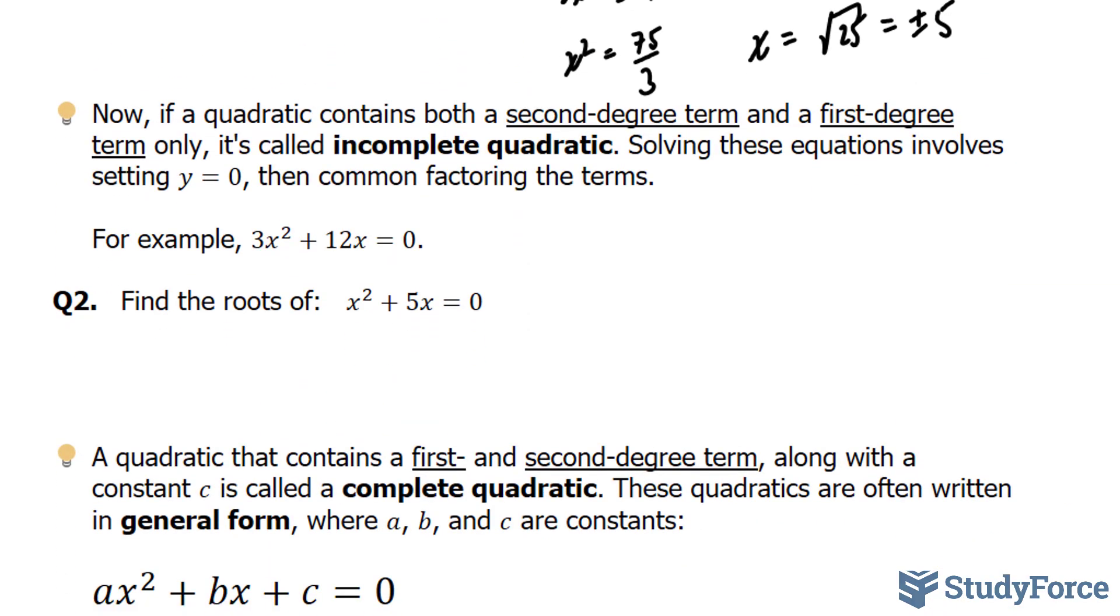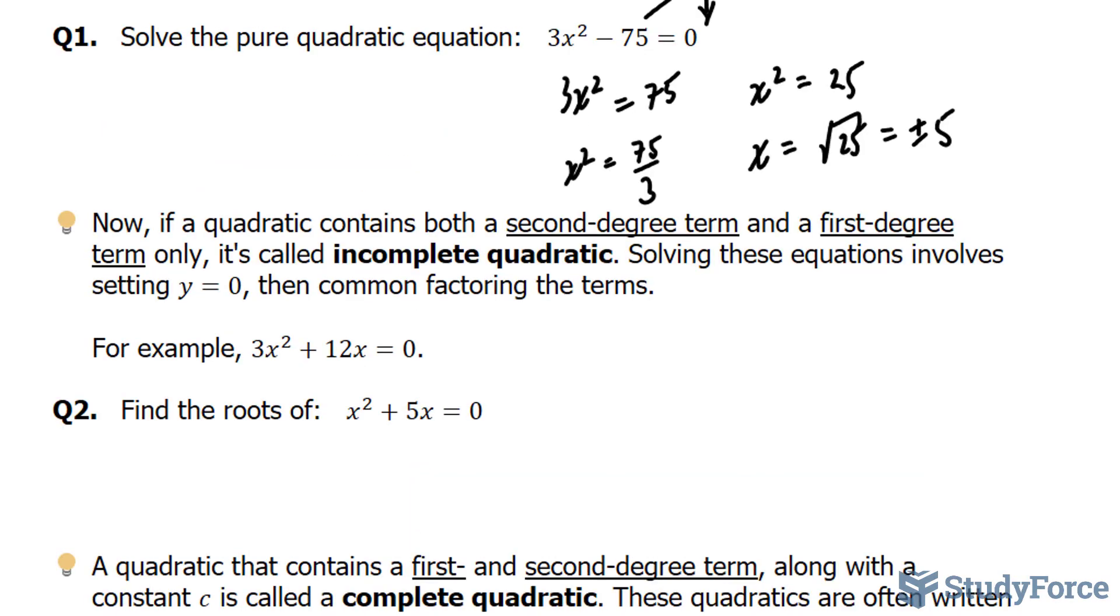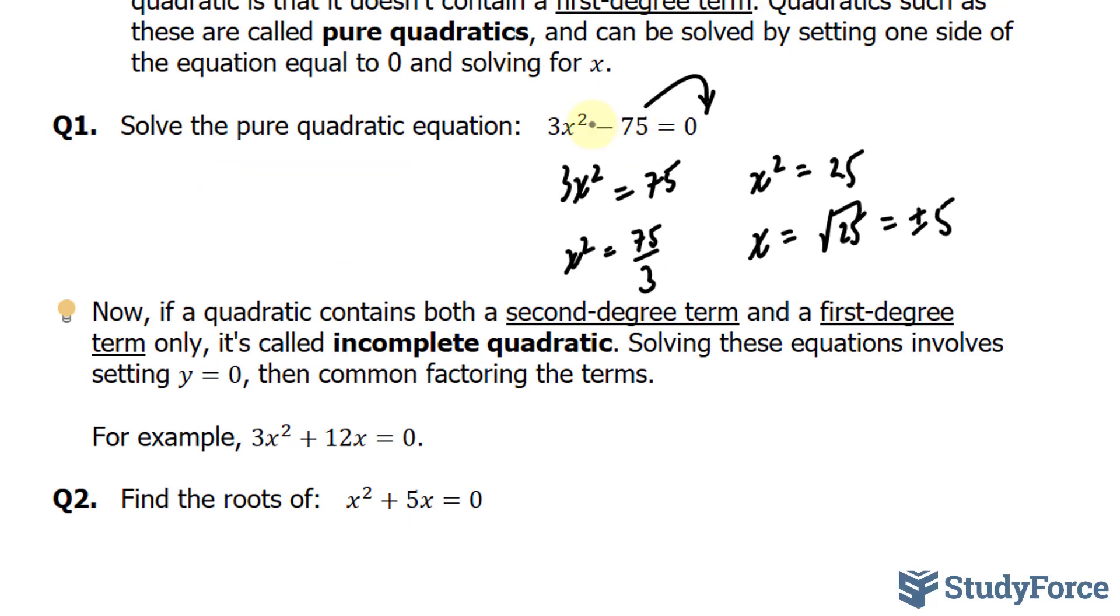Now, if a quadratic contains both a second degree term and a first degree term only, there's no constant such as the minus 75 here, it's called an incomplete quadratic.